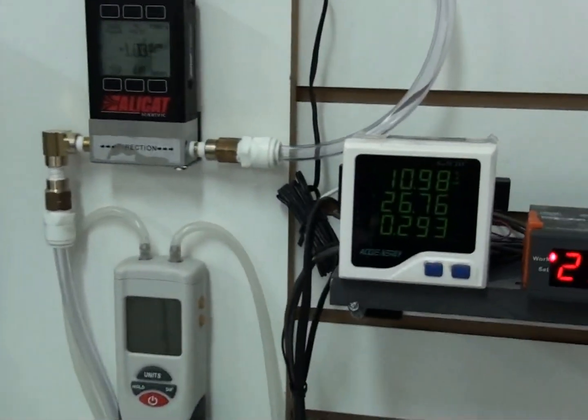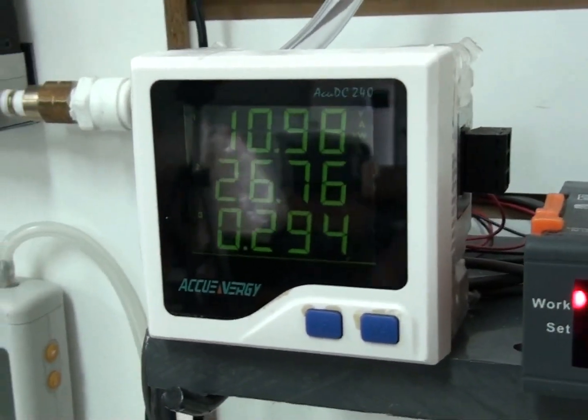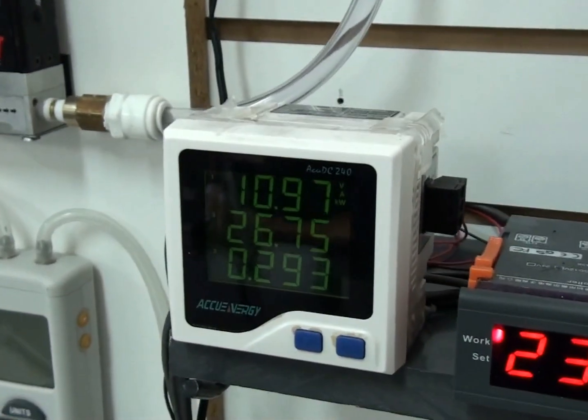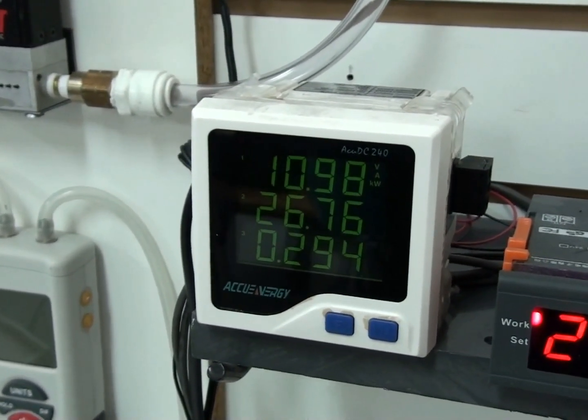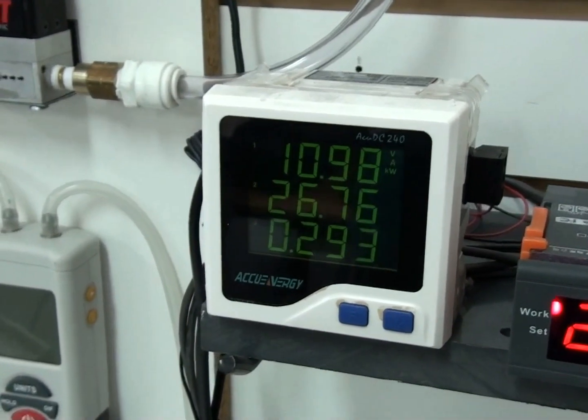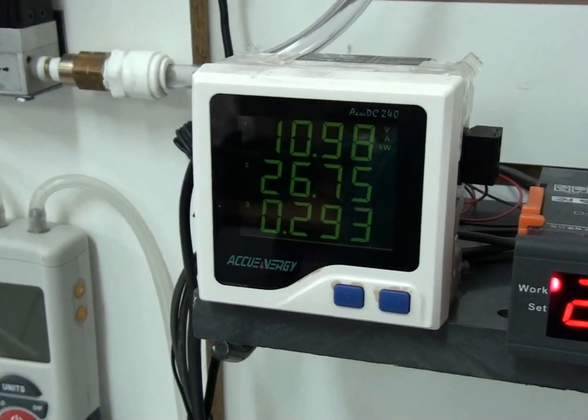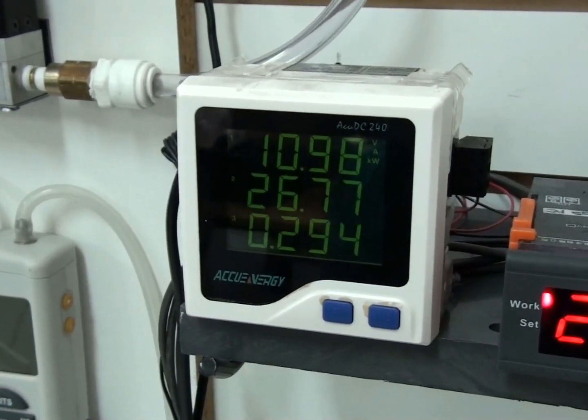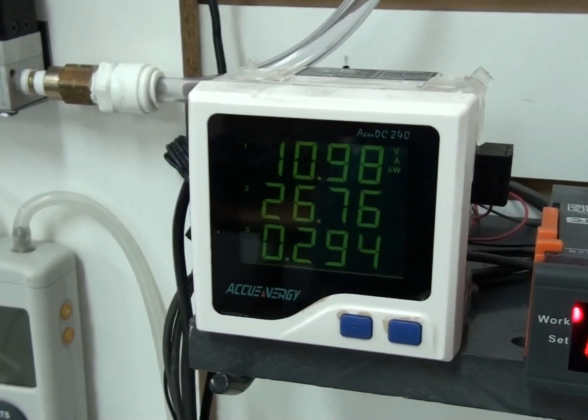Next we'll go up to the power meter. This is an AccuEnergy power meter. At the top it reads our voltage, a little under 11 volts. The second number in the middle is our amperage, a little under 27 amps. And the bottom number is the wattage. As you can see it is 293 watts.